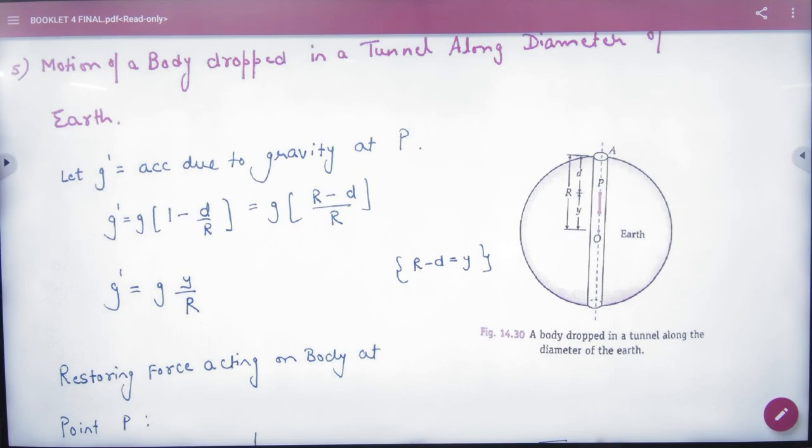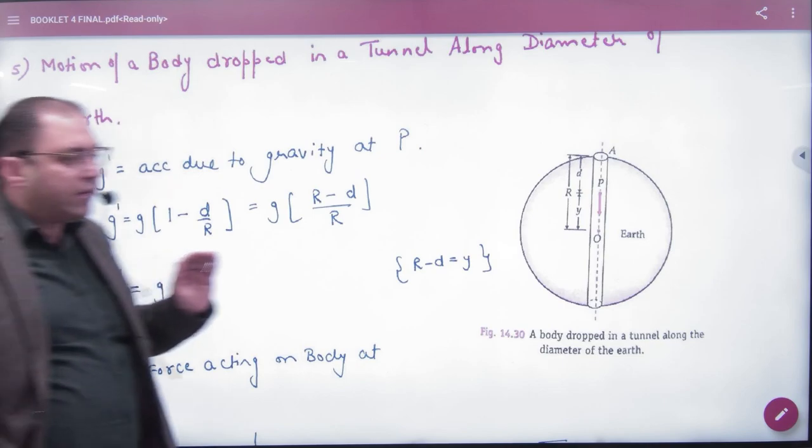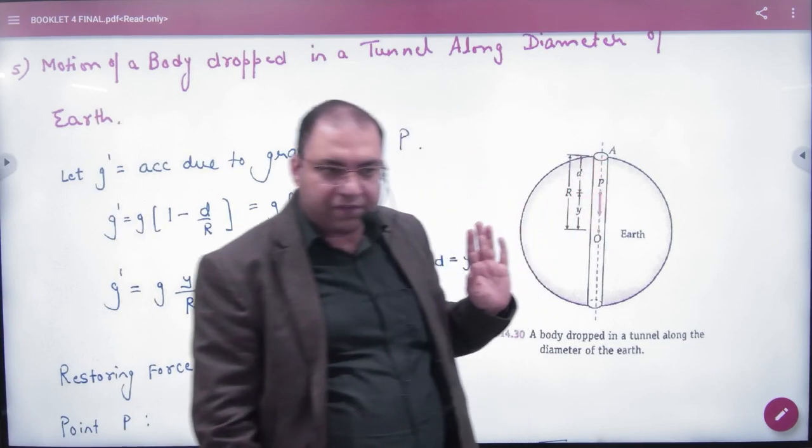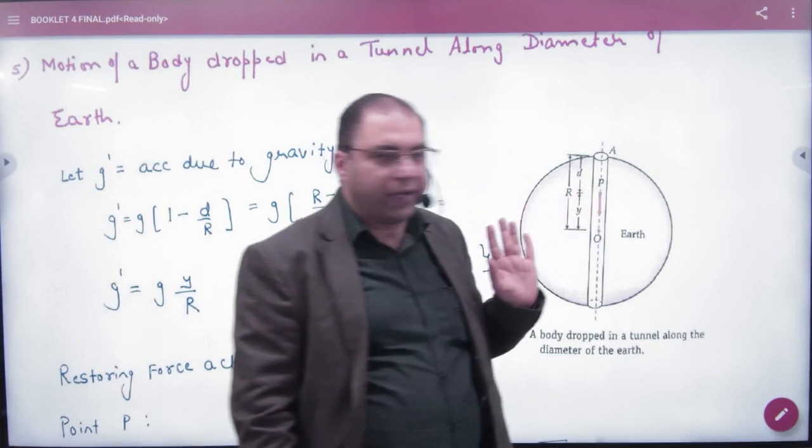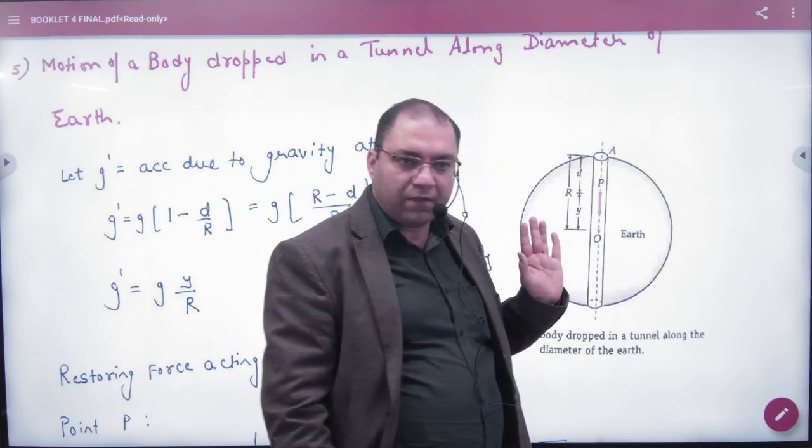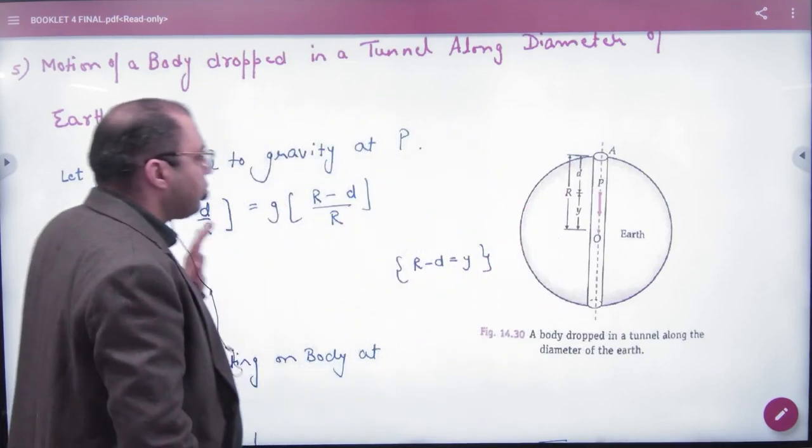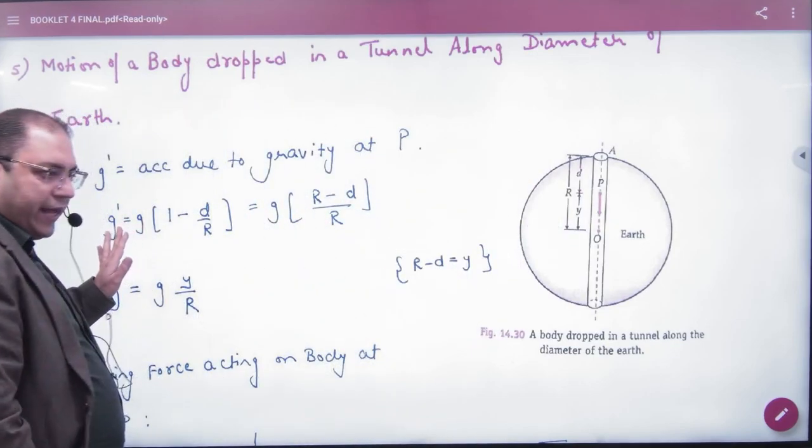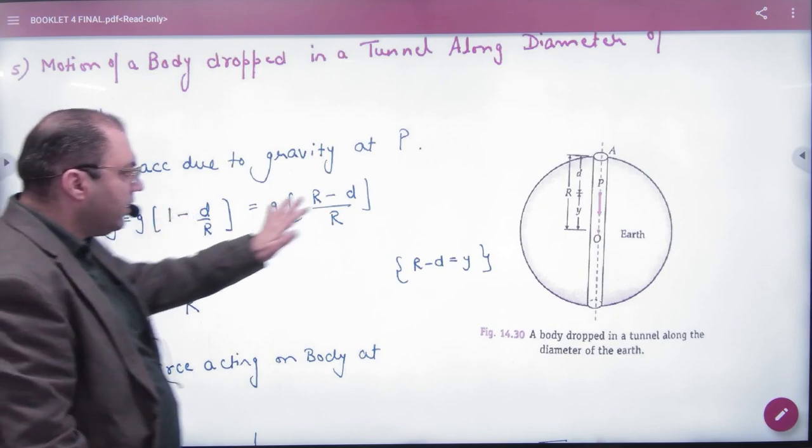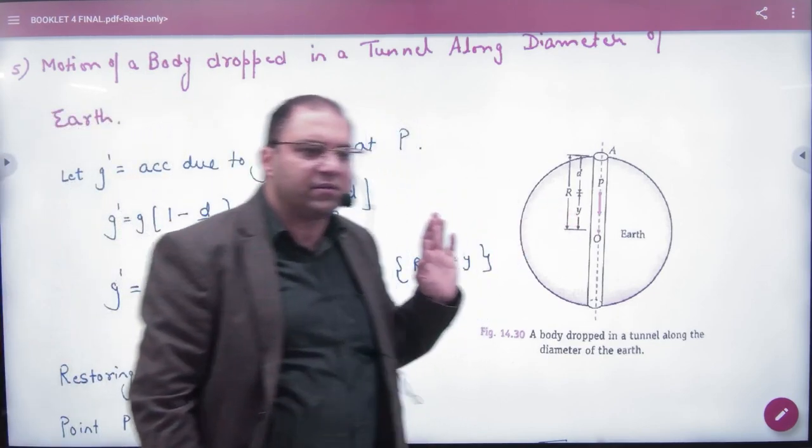To prove this is SHM, we need restoring force. Suppose the ball is at any instant at point P, at a distance d from surface of earth. The distance from center is y, where y = R - d. Acceleration due to gravity at point P is g' = g(1 - d/R), which becomes g(y/R), where y is the distance from center.